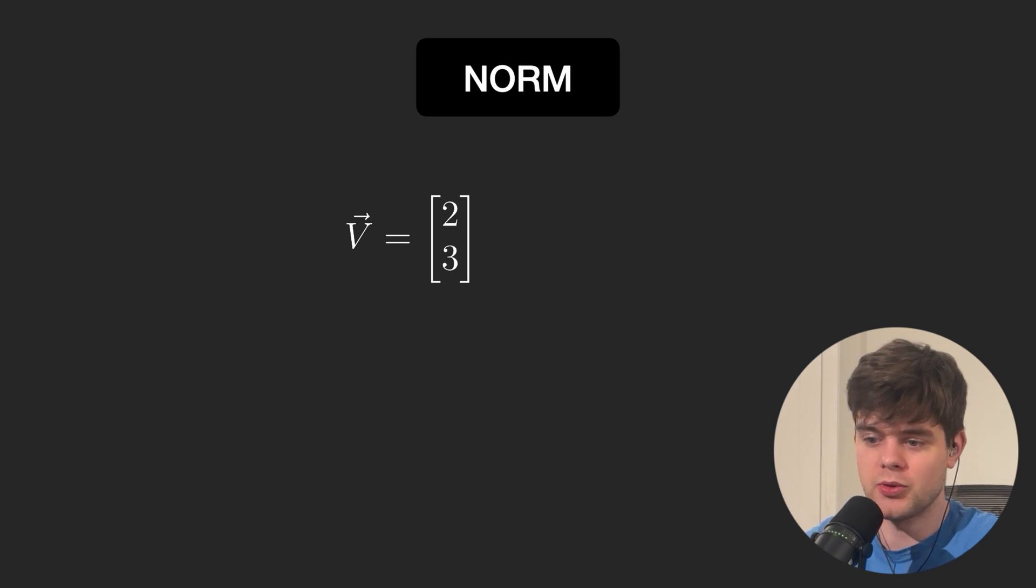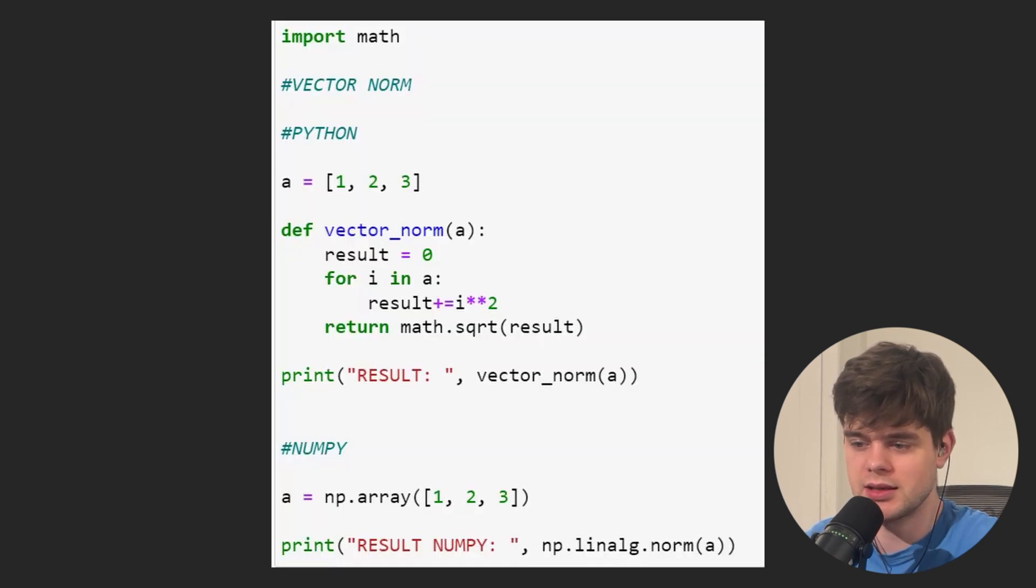We can also compute the magnitude or norm of a vector, and this is done using the Pythagorean theorem. To do that, we compute the square root of a sum of squared elements, and this is the mechanics in pure Python. We initialize a result as zero, iterate through a vector, square each component and add it to our result. We also compute the square root before returning the result.